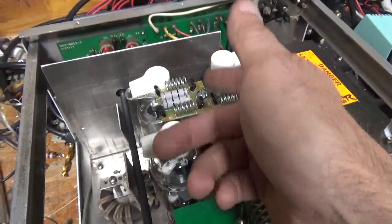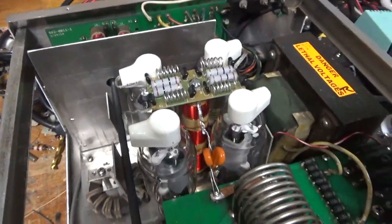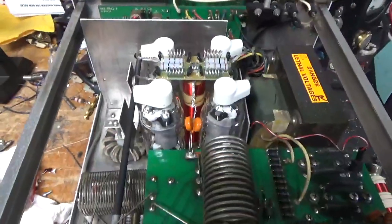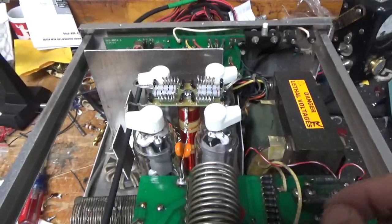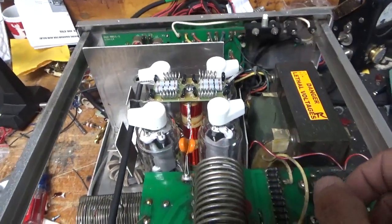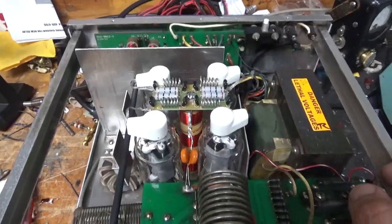Replaced the SO239 connectors. Cleaned the rotary switches, the band switch and the input rotary switch with DeoxIT Gold. Tested full output on all bands. Got a brand new set of Pentelab 572B tubes. Great customer service over there.